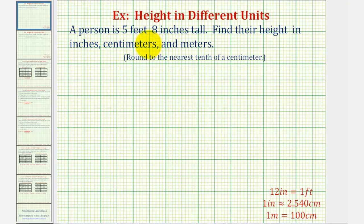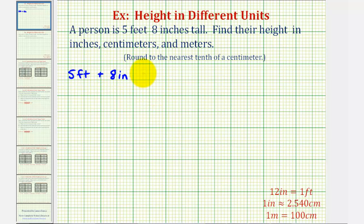So if the person is five feet eight inches tall, their height would be the same as five feet plus eight inches, which means if we convert five feet to inches, this sum will give us the height in inches. So we'll start by converting five feet to inches using the conversion that one foot is equal to twelve inches.